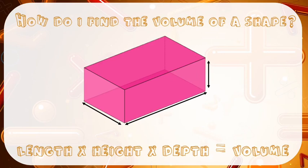The first thing we should really talk about is how do I find the volume of a shape. The really easy way of explaining that is that you have to multiply the length, the height, and the depth all together to find the volume. Just like on a 2D shape — if you were finding the area you would find the height times the length — you're now just adding the third dimension onto this, which is the depth.